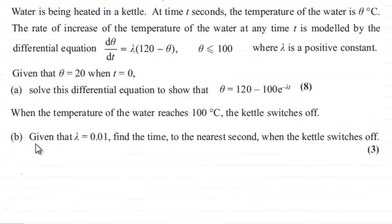Hi there. Before we start part B, just to recap, if you watched the last video, I solved part A here. We were given this differential equation: dθ/dt = λ(120 - θ). And when we solved it, we found that θ = 120 - 100e^(-λt).